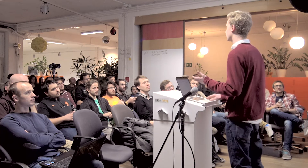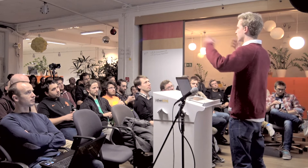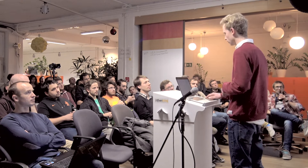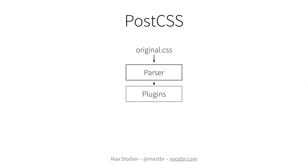What you can now do is take that syntax tree and do something with it — change something in it. And then when you've changed something in it, you pass it back to PostCSS, which stringifies it, turning that abstract syntax tree back into a CSS file and outputs that.